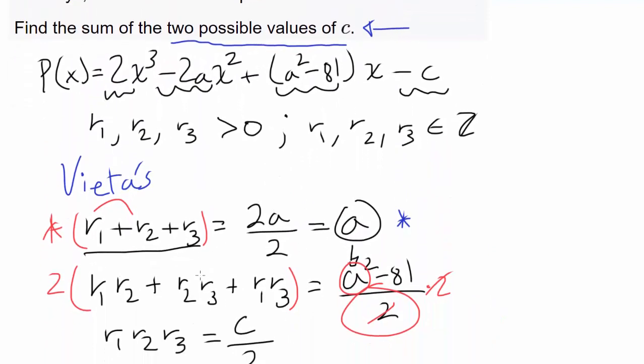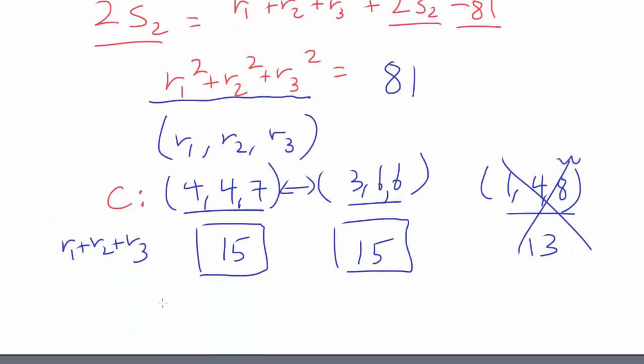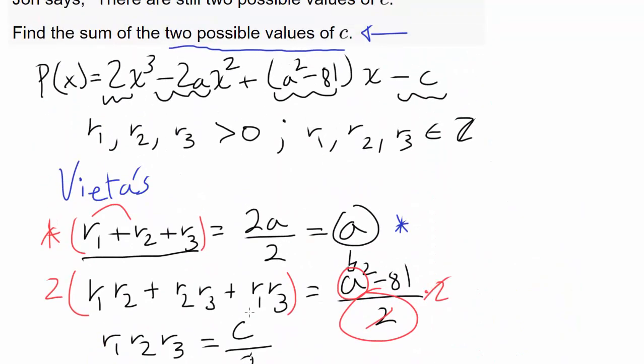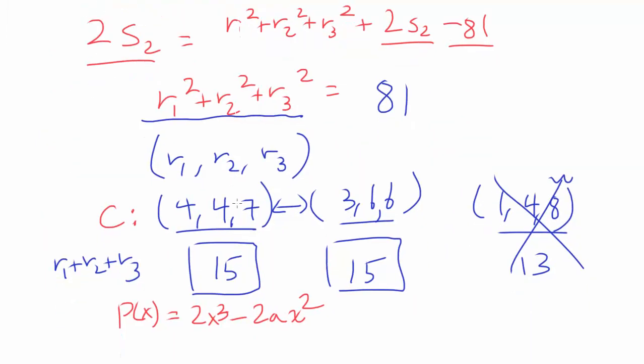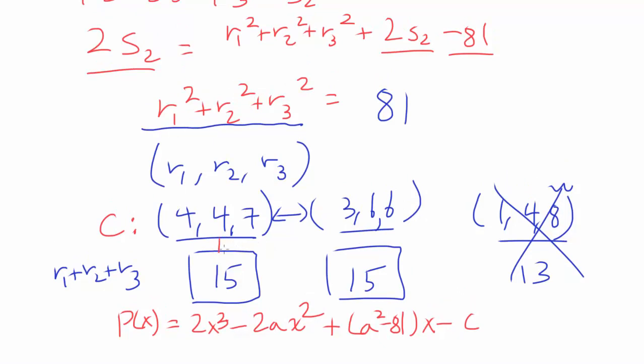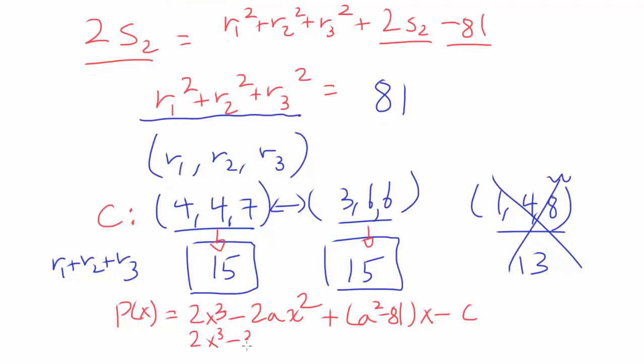So let me rewrite this polynomial. P(x) = 2x³ - 2ax² + (a² - 81)x - c. We know the value of a for this one is 15. So we can plug what we know into this equation. We have 2x³ - 30x², plus squaring 15 gets us 225, subtracting 81 gets us 144, so 144x - c.